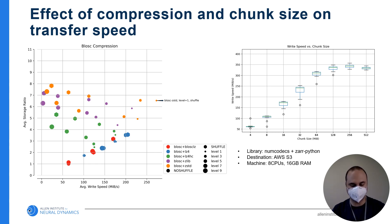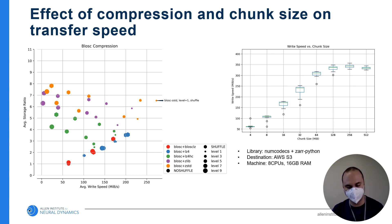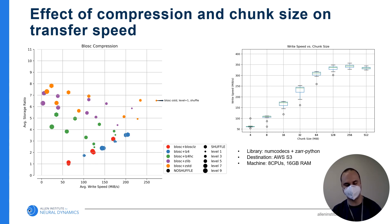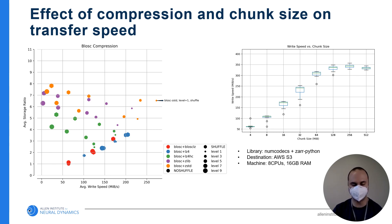We also explored the effect of chunk size on write speed. It was found that larger chunks, up to a certain point, improve write speed to AWS S3 from on-premises compute. An important consideration when selecting a chunk size is the performance in downstream analysis and visualization tools. Chunks that are too large will lead to unnecessary memory usage and download time when reading small regions of interest, but chunks that are too small will slow down network transfer and increase cloud storage costs. So we use 32 megabyte chunks before compression, which provides a good balance between transfer time and visualization performance in the cloud.